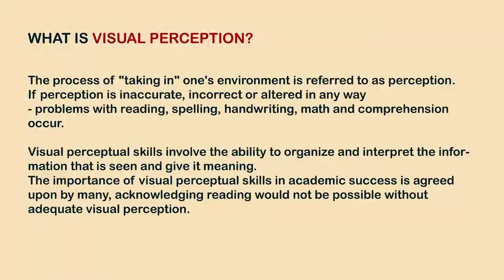The process of taking in one's environment is referred to as perception, and if perception is inaccurate, incorrect, or altered in any way, problems with reading, spelling, handwriting, calculation, mathematics, and comprehension may occur. Visual perceptual skills involve the ability to organize and interpret the information that is seen and, in turn, give it meaning.